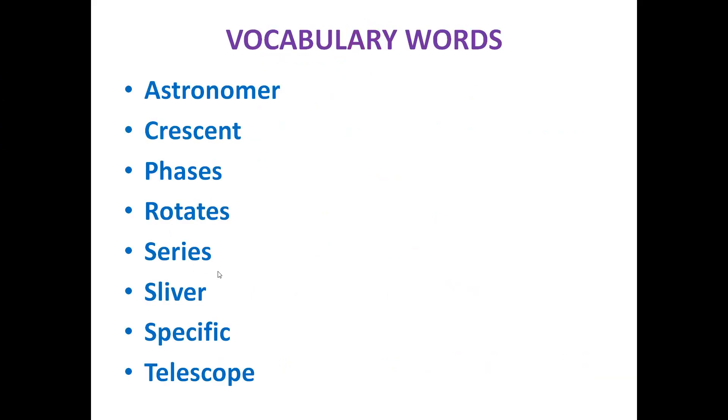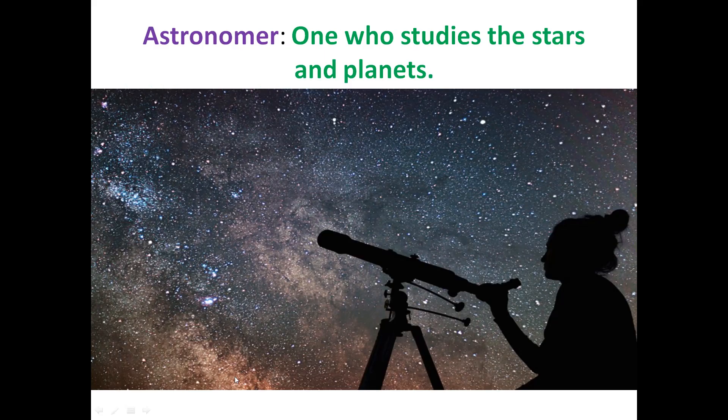The vocabulary words for this lesson are: Astronomer, Crescent, Phases, Rotates, Series, Sliver, Specific, Telescope. Now we will go for the meanings.